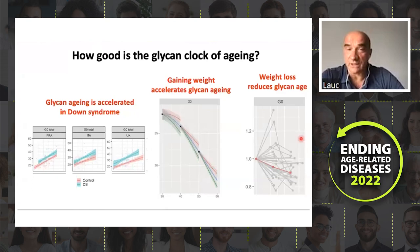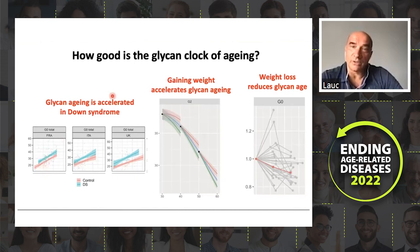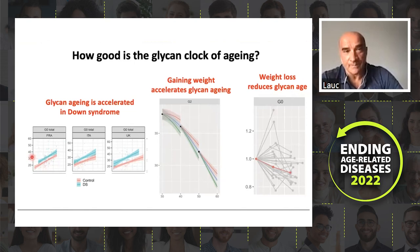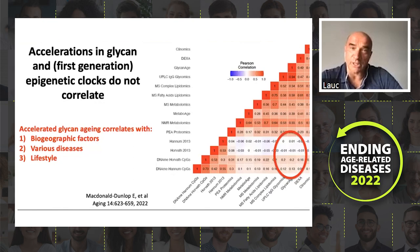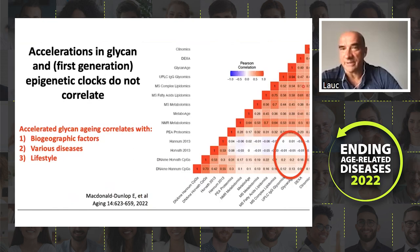It does show accelerated aging in Down syndrome — interestingly, the acceleration happens very early and then the pace remains the same later. We know that gaining weight is associated with accelerated glycan aging. Interestingly, the acceleration in glycan aging and the first-generation epigenetic clocks do not correlate. Different clocks correlate with each other because they all correlate with age, but the acceleration in some clocks correlates better. A paper from the group in Edinburgh showed that some clocks correlate better with glycans, but the first-generation clocks do not correlate well with acceleration in glycan aging.